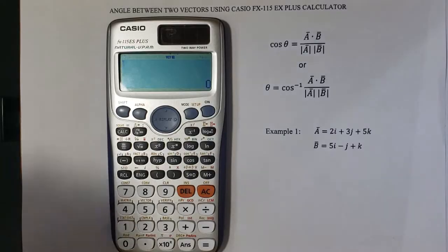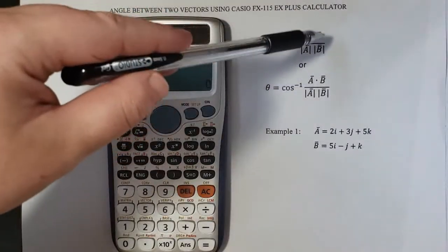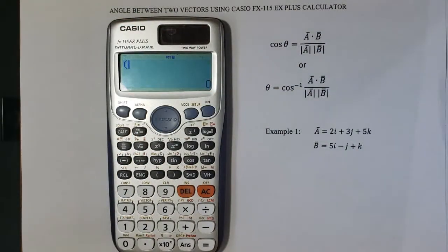Now I will open a parenthesis and in the calculator, I will insert everything that's here on the right side of the equation. We have a dot product of the two vectors.